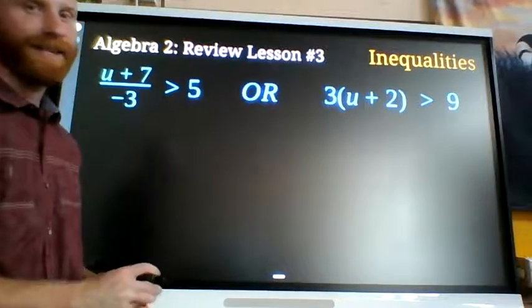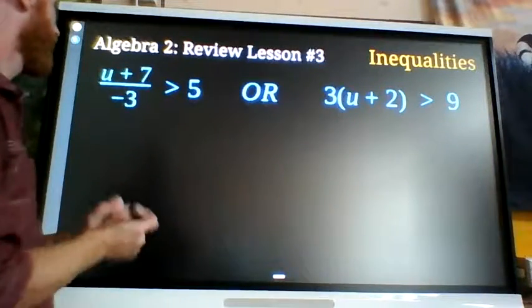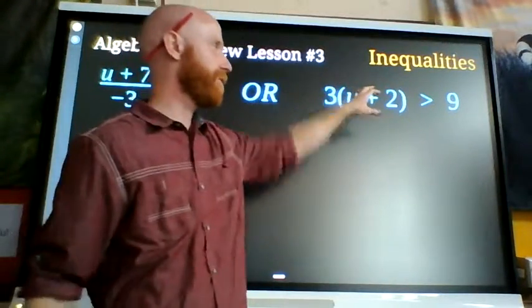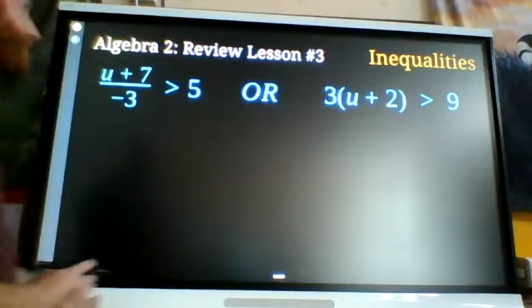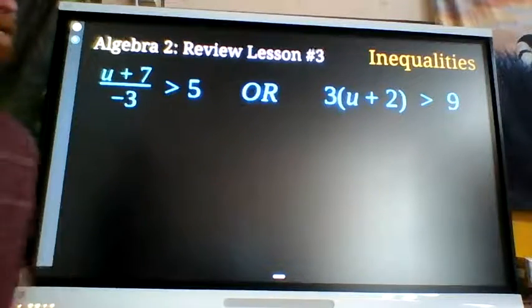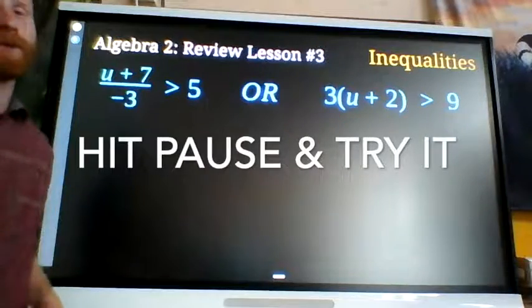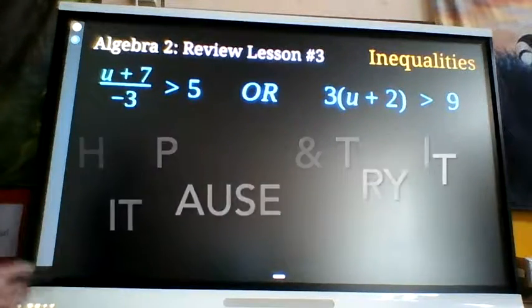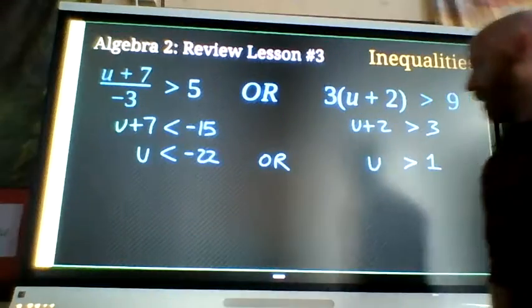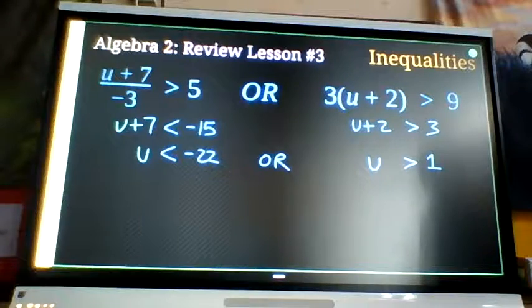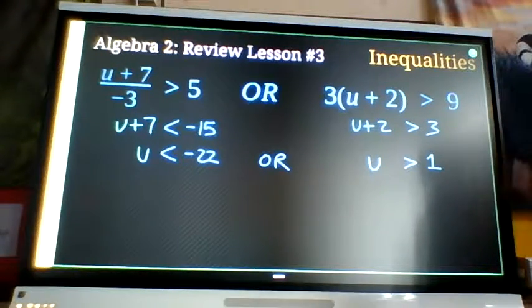This can be true or that can be true. Again solve each separately. I'm gonna let you try that, hit pause, see if you can solve them separately and then unpause and see what you got compared to what I have. Hopefully you came up with something close to this: u is less than negative 22 or u is bigger than 1.